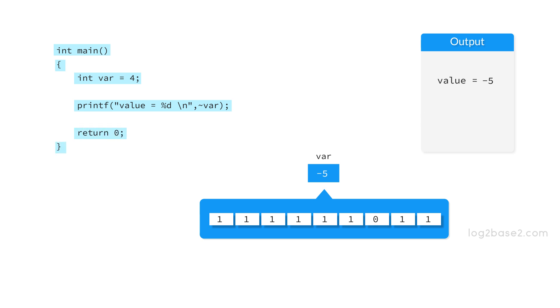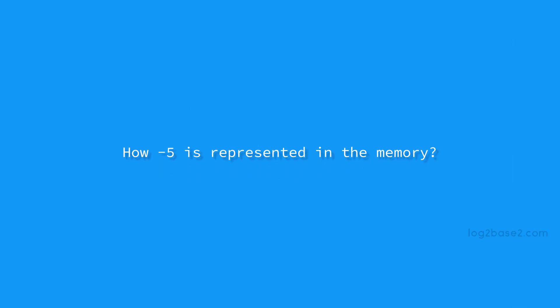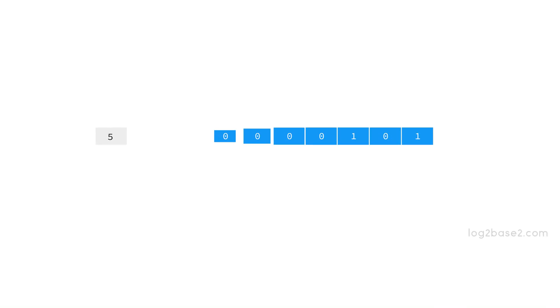Now, how is the complement of four equal to minus five? To understand that, let us understand how minus five is represented in memory. The number five is represented as 0 0 0 0 0 1 0 1, and negative numbers are stored in memory using two's complement form. To find the two's complement form of a number, first find the one's complement and then add one to it.